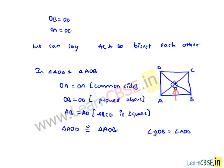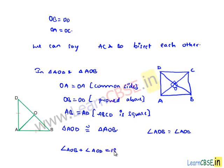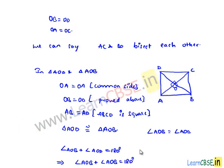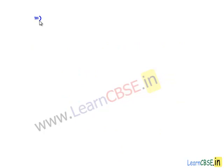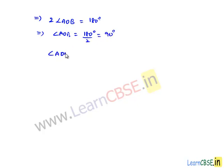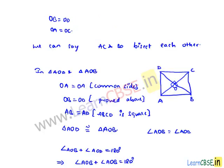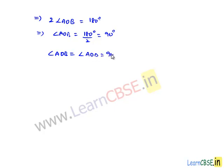Now, angle AOB and angle AOD form a linear pair about line BD. So the sum of angles in a linear pair — angle AOB plus angle AOD — will be equal to 180 degrees. Since angle AOB is equal to angle AOD, we can replace angle AOD with angle AOB. Therefore angle AOB plus angle AOB equals 180 degrees, which implies 2 times angle AOB equals 180 degrees, which implies angle AOB equals 90 degrees. So angle AOB is equal to angle AOD is equal to 90 degrees.